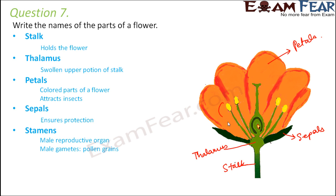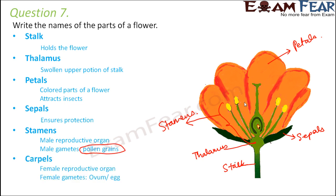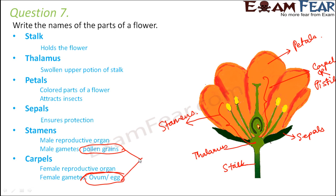Stamens are the male reproductive organs of the flower — they produce the male gametes called pollen grains. The female reproductive organ, present at the center, is called the carpel or pistil — it produces the female gametes, which is the ovum or egg. These pollen grains and ovum fuse together, and that is how sexual reproduction takes place in a plant.